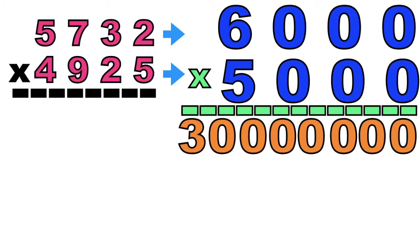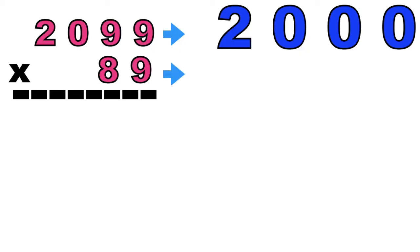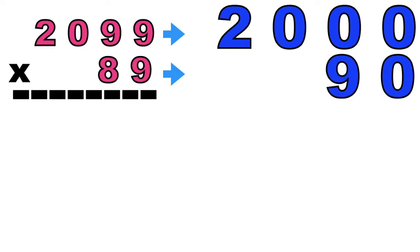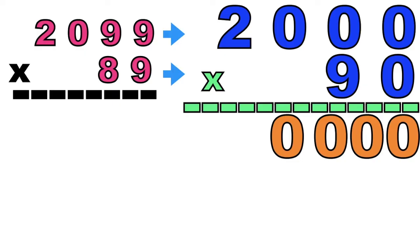How about if we have 2,099 times 89? Let's estimate the first factor. 2,099 will become 2,000. How about 89? It will become 90. So we can now multiply them. How many zeros are we going to write here? 4 zeros, since we have 4 zeros at the top.